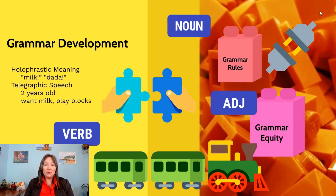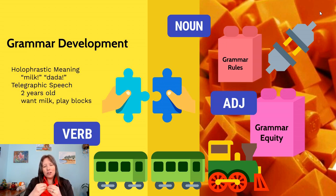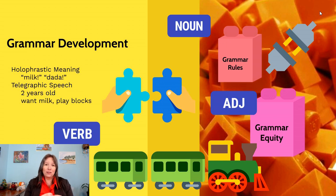We've talked about phonemes and morphemes — now we need to talk about combinations and syntax. It's not just that words have meaning, but the order of these words has meaning. Grammar is the idea that if you rearrange words, you can mean something completely different.